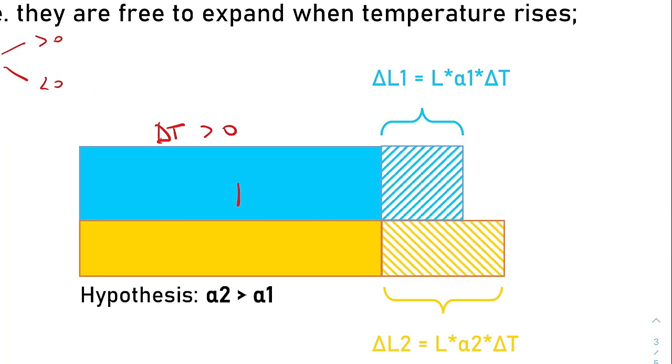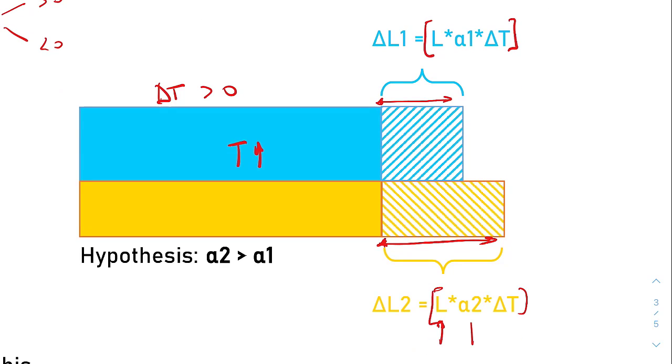Once temperature increases, you will record an increase of length of both the metals. This increase of length can be computed as these formulas suggest: the original length times the coefficient of linear thermal expansion times delta T. Since I made the hypothesis that alpha 2 is bigger than alpha 1, delta L2 will be bigger than delta L1.